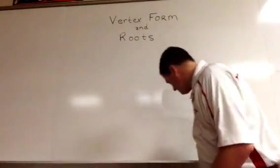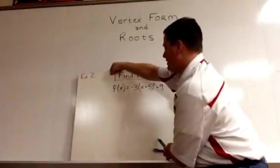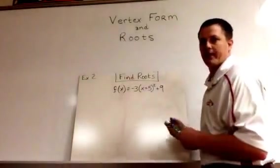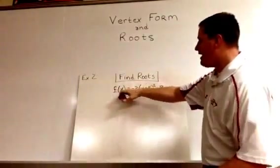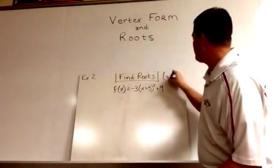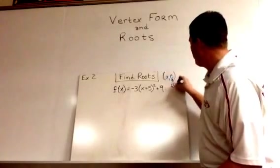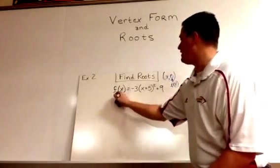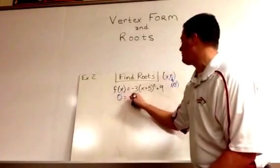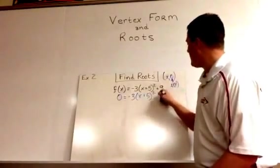Our second example looks like this. In this one I have f of x, that's no different than a y. In this respect we've got x, 0 is our root, so 0 goes in for f of x, giving us 0 equals negative 3 times x plus 5 squared plus 9.